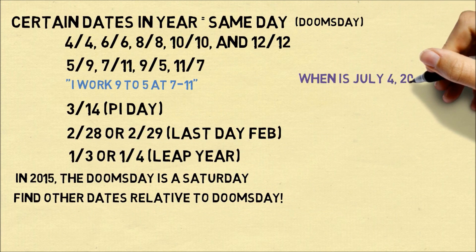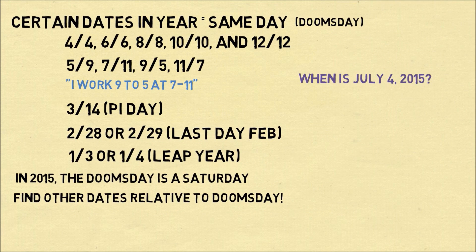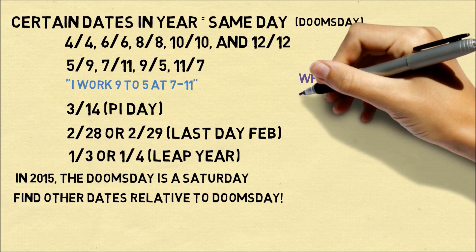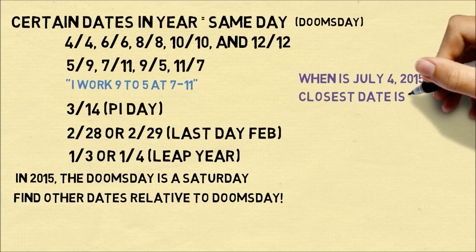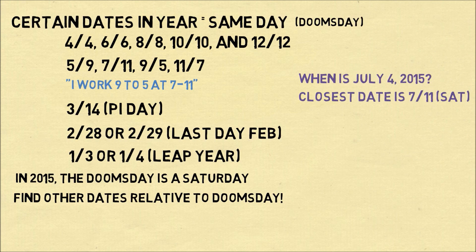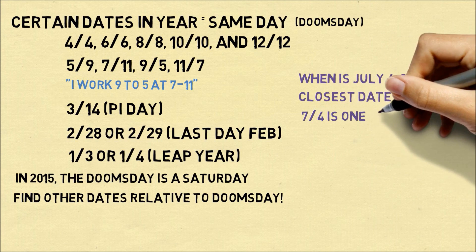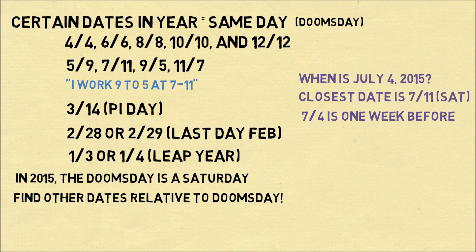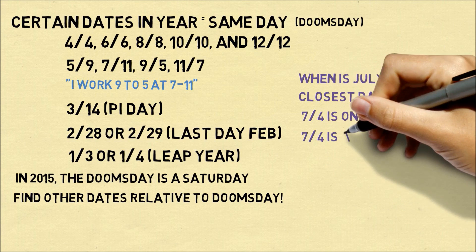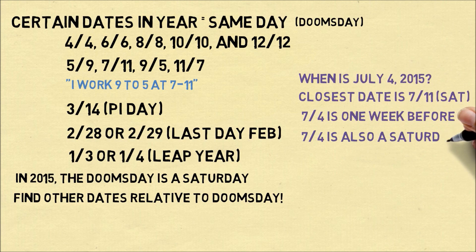Let's see how this works. Let's try and figure out when July 4th of 2015 will be. The first step is to look for the closest date in our list of memorable dates — that will be July 11th, which is a Saturday. July 4th is one week before that, and since it's exactly one week before, it will also be a Saturday.